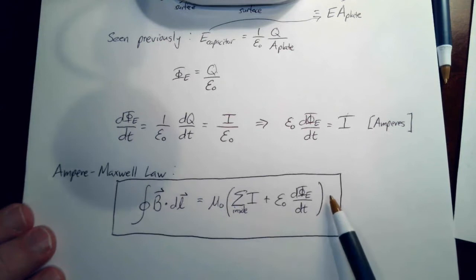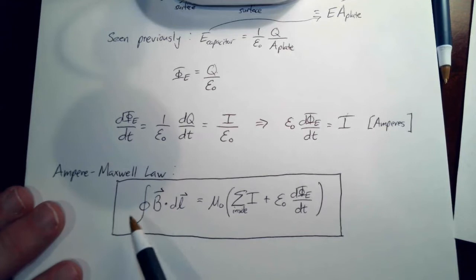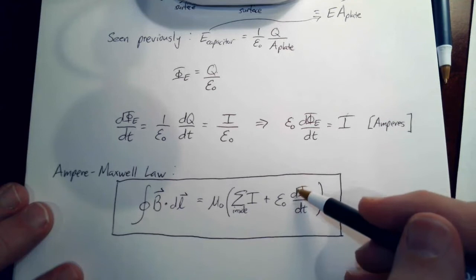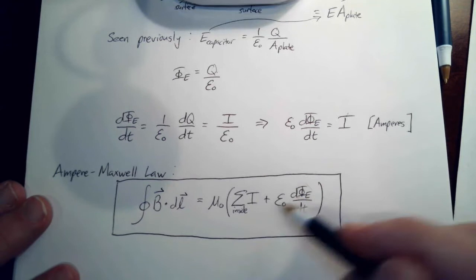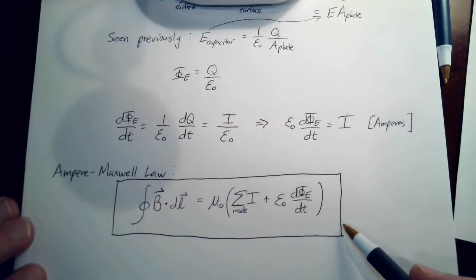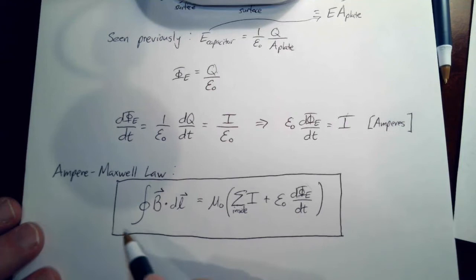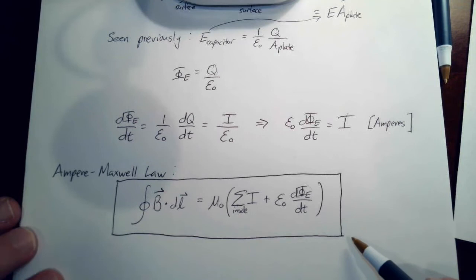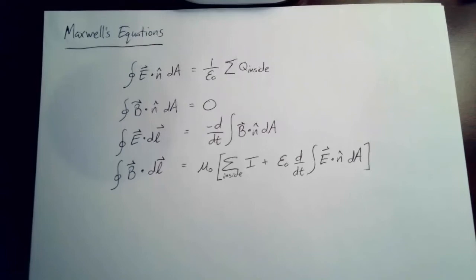Was Maxwell right? Is this a correct modification to Ampere's law? Interestingly, in his time they were unable to test this directly because it's very hard to test a changing electric flux when you've also got a current nearby. The most compelling evidence that Maxwell was right comes from the predictions he was able to make about electromagnetic radiation, which we'll cover in the next lecture.